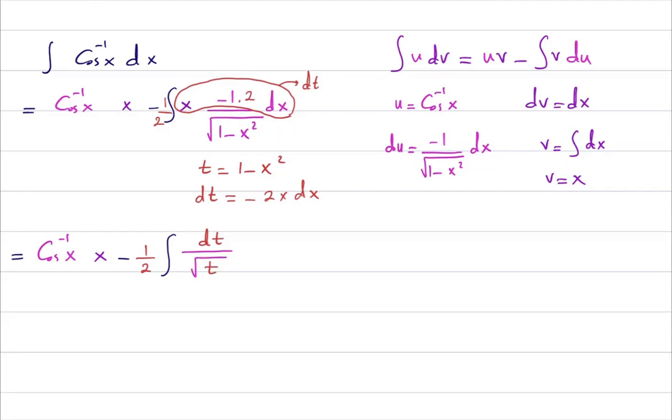You already know how to deal with this integral, so so far we have inverse cosine of x times x minus a half, and you have the integral of dt times t to power negative a half.